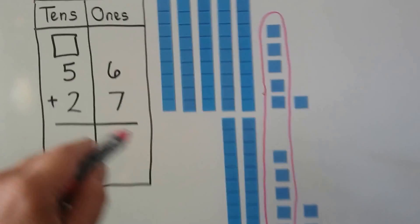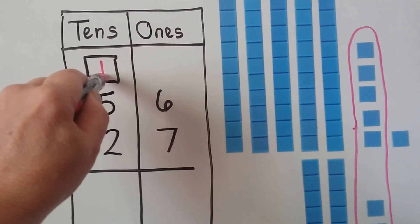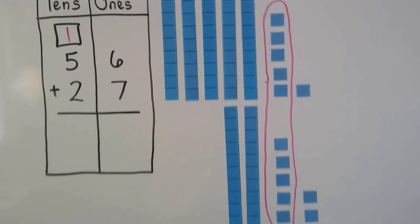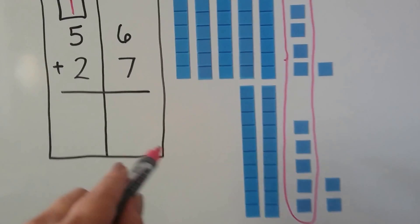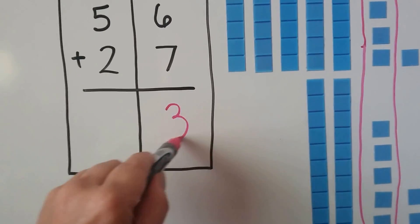Now that we've made a new 10, we can add it to the tens place, that one 10 we made. How many ones are left over? 1, 2, 3. So we put a 3 in the ones place.